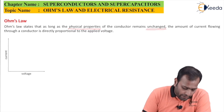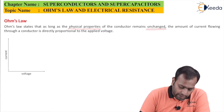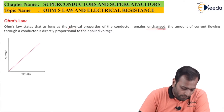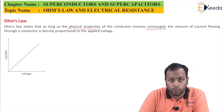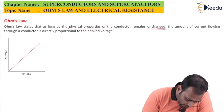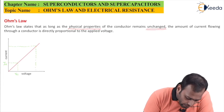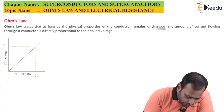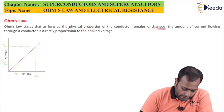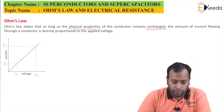If I take this as my voltage axis and this as my current axis and keep on increasing the voltage, I will find the current is increasing as well — this is Ohm's law. If this is voltage V1 with corresponding current I1, and for voltage V2 I have I2, then since V2 is greater than V1, I2 is also greater than I1, which means they are directly proportional.